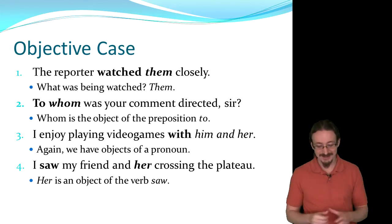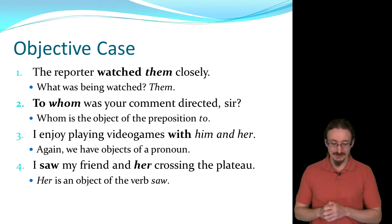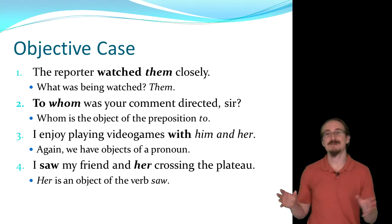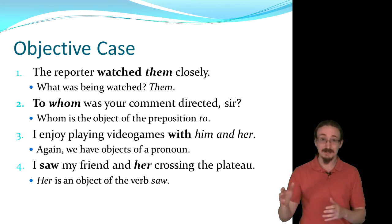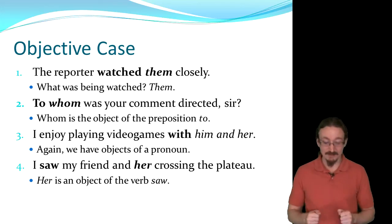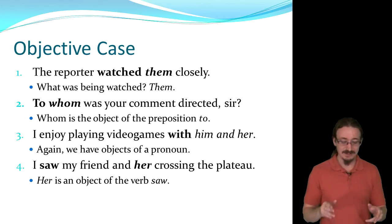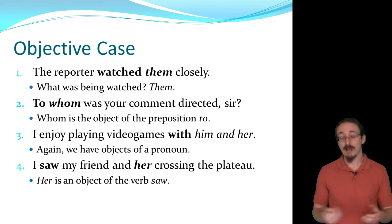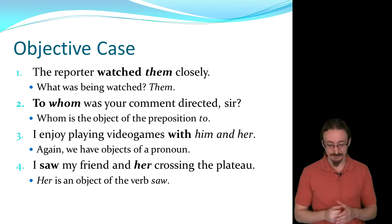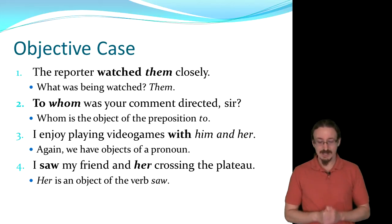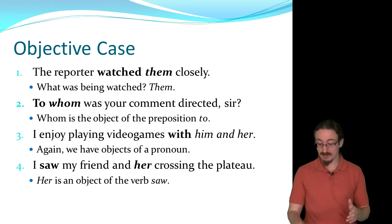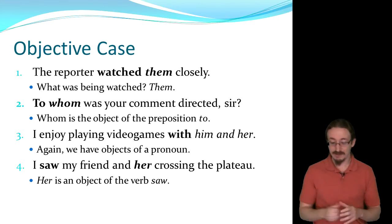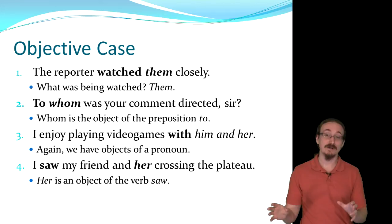If you're confused about I versus me, just take out the first part and look at just I alone: 'I enjoy playing Donkey Kong' versus 'me enjoy playing Donkey Kong' — you know which is correct. Objective case: 'The reporter watched them closely' — them, not they. 'To whom was your comment directed, sir?' — whom is the object of the preposition to. 'I enjoy playing video games with him and her' — with is a preposition, so its objects are him and her, not he and she. 'I saw my friend and her crossing the plateau' — those are objects because you're saying what was being seen.